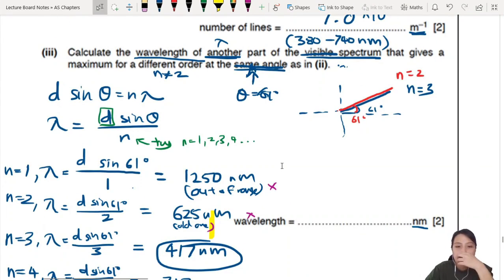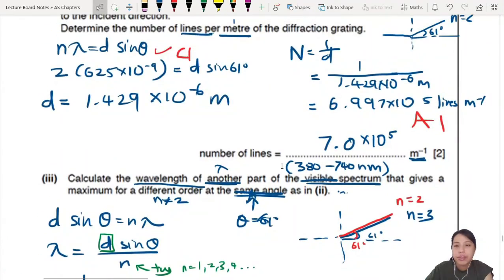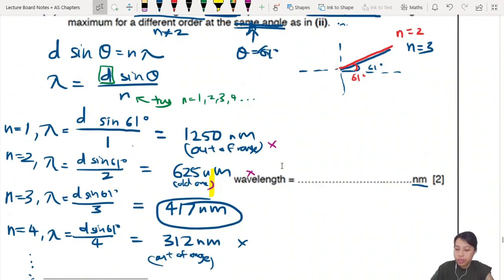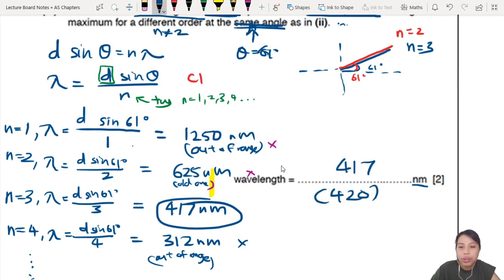So that's how you can think of this question. Two marks for this one. So that means one comes from your equation. Do you know how to use the d sin θ n λ? That one's correct. And then if you have written 417 as your final answer, then that's correct. If you do 2SF, then it's 420. Both correct. Mark scheme will write 420. Usually they do 2SF but you can write 3SF. So A1. Two marks for this. Let's go.